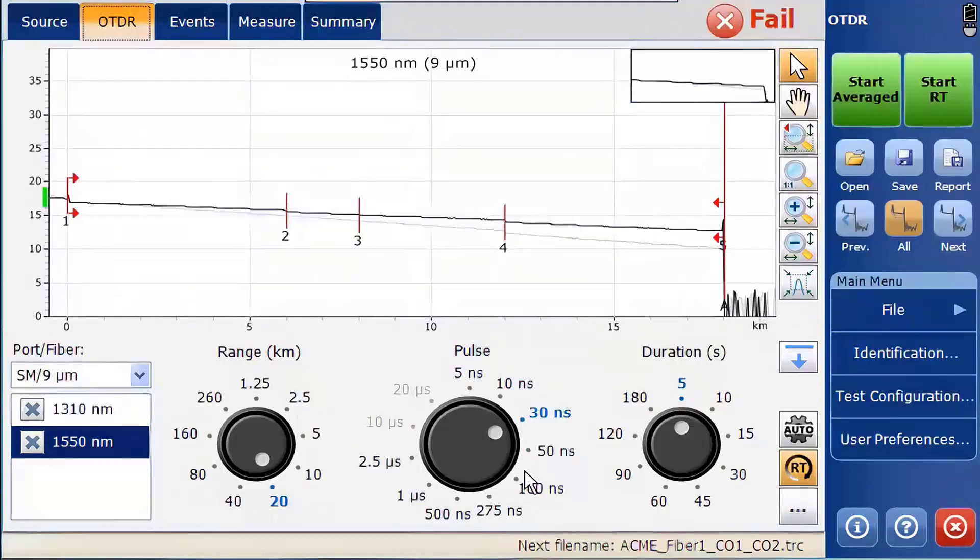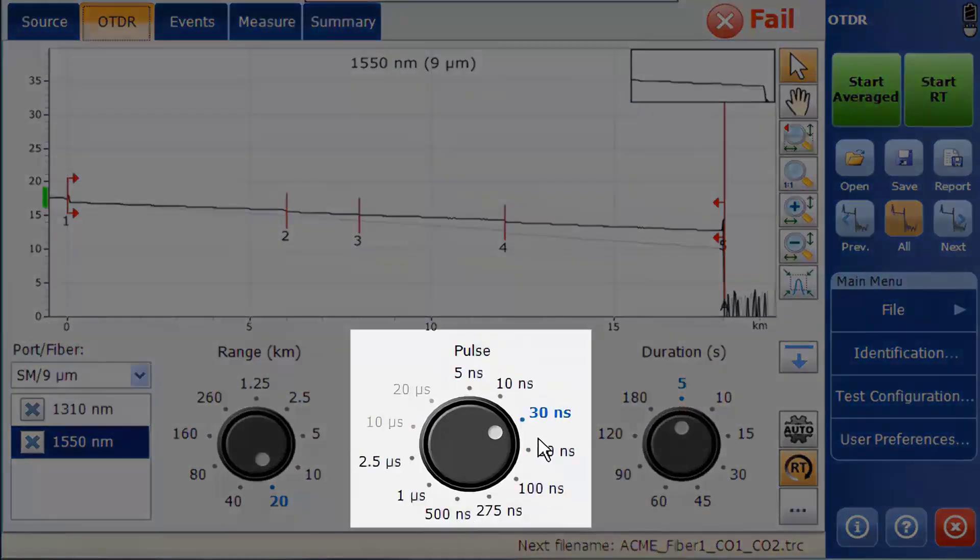The pulse width has a direct relationship on the distance which can be tested. The higher the pulse width, the greater distances can be tested. Inversely, the shorter the pulse width, the higher the resolution. If it's important to identify many events in close proximity, then the pulse width must be short. It is good practice to continue reducing the pulse width with a short duration until the noise level is too high, then increase the pulse width slightly to have a clean signal.